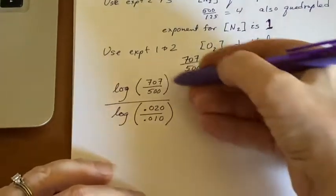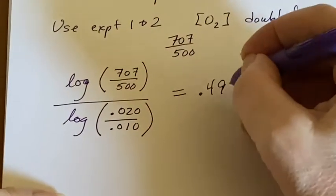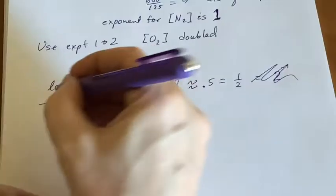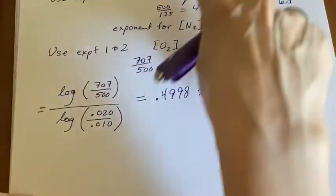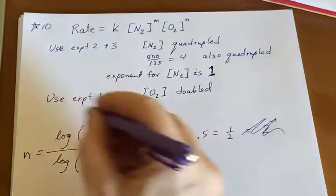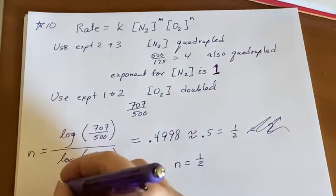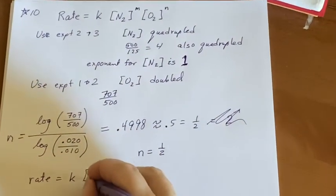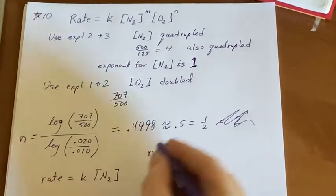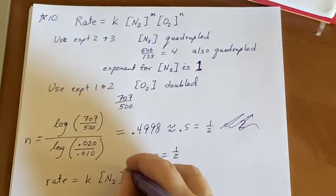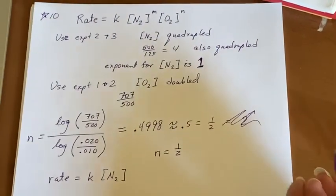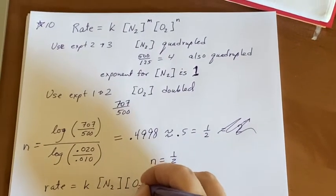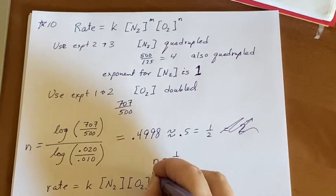If I actually do this calculation, I find out 0.4998 is approximately 0.5, which is one half. This is supposed to be the coefficient. So n should be a half. So I'm going to say then that the rate is K, the concentration of nitrogen to the first power, which means I don't have to write anything there because as soon as you don't write anything there, you assume it's a one, and the concentration of oxygen to the one half power.